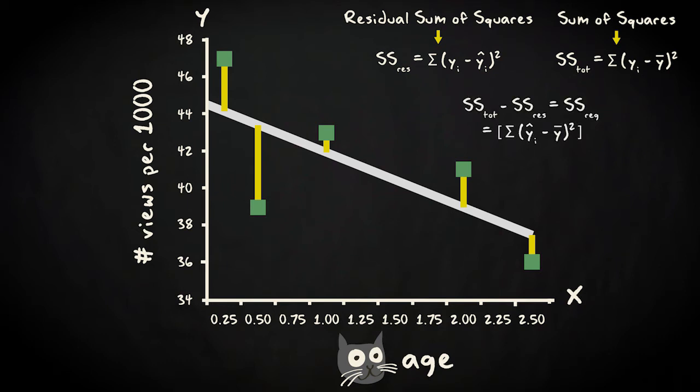If we take the total sum of squares and subtract the residual sum of squares, we get the regression sum of squares, the variation in video popularity that is accurately captured by our model. If you divide the regression sum of squares by the total sum of squares, you get r squared, the proportion of variation in the response variable explained by the predictor.